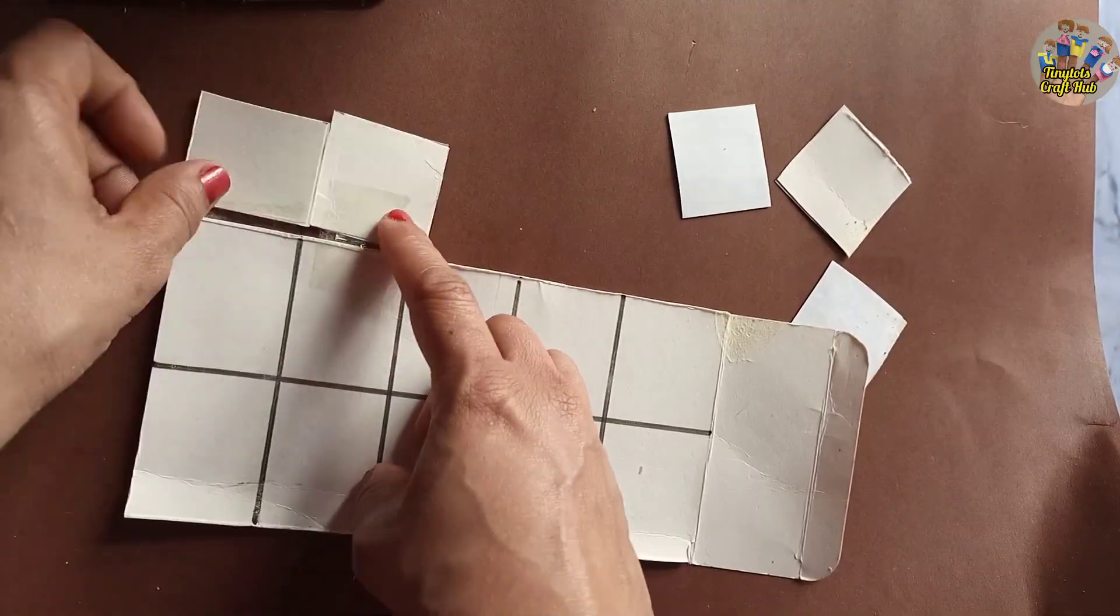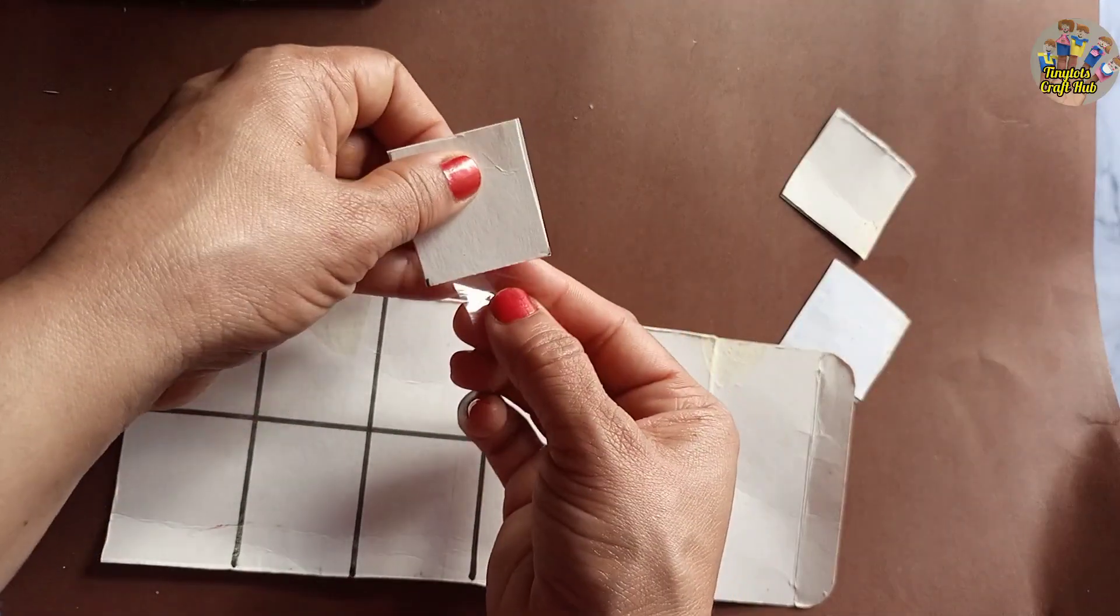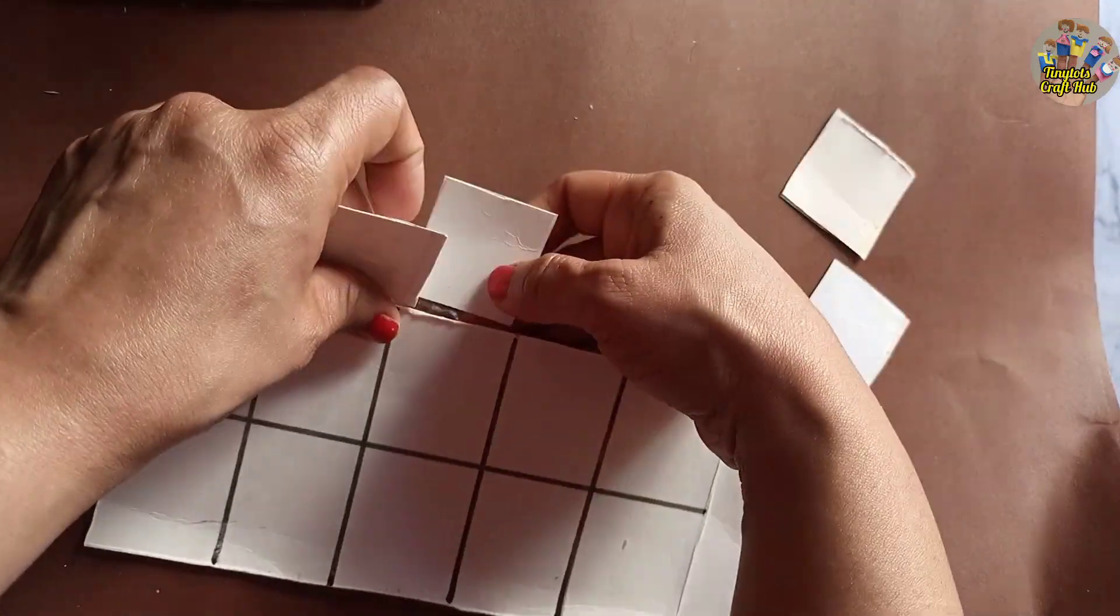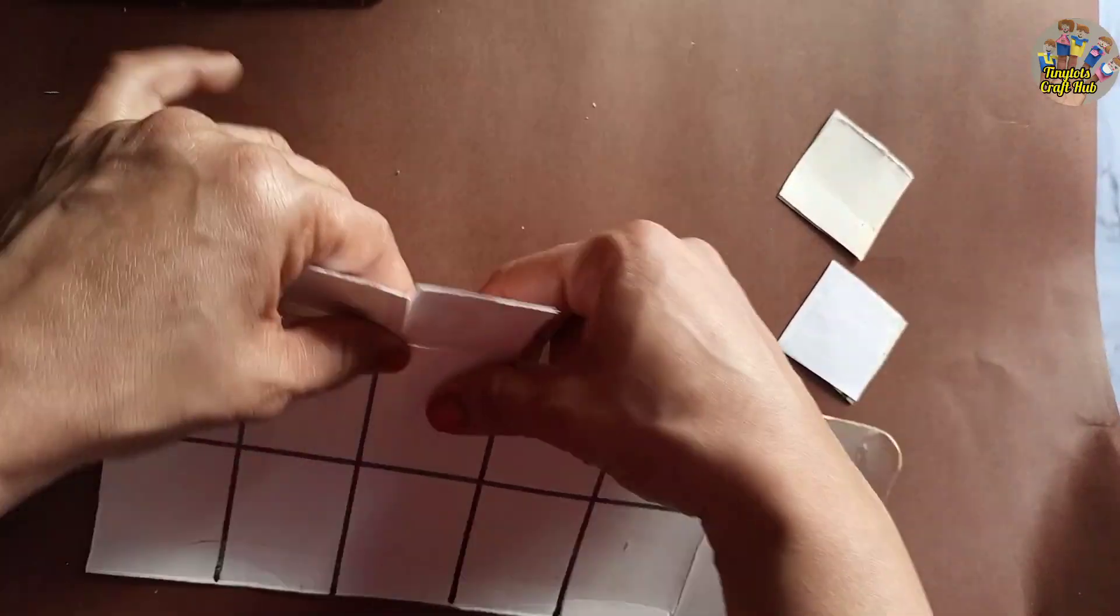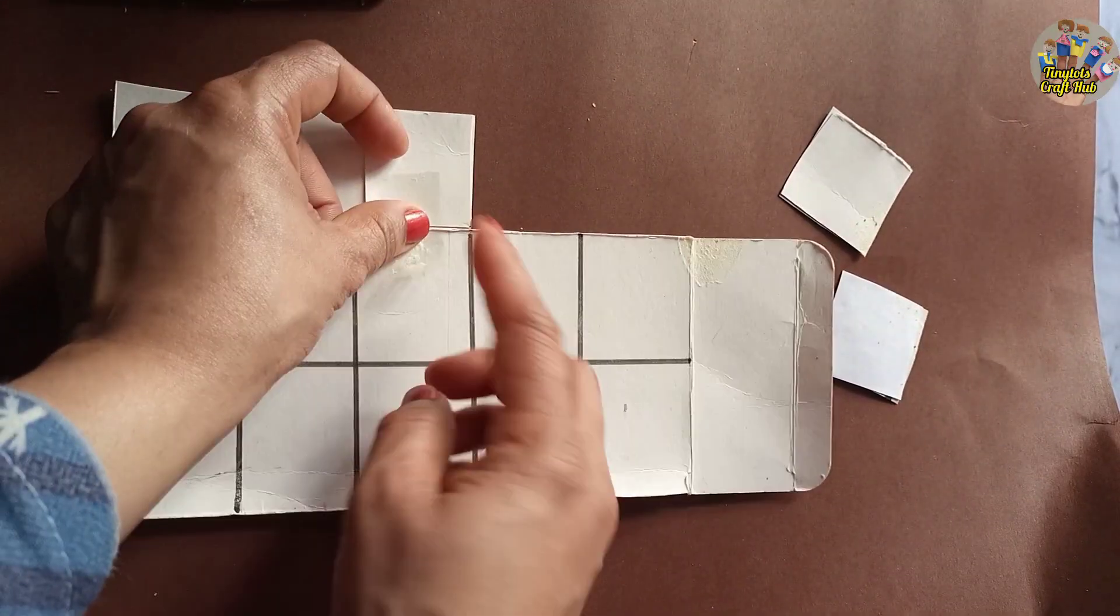This activity board will really help your child understand subtraction and addition and all the numbers. You can change the numbers from one to ten, or you can also increase the numbers, but I am doing one to ten. Join these boxes together with the help of tape.